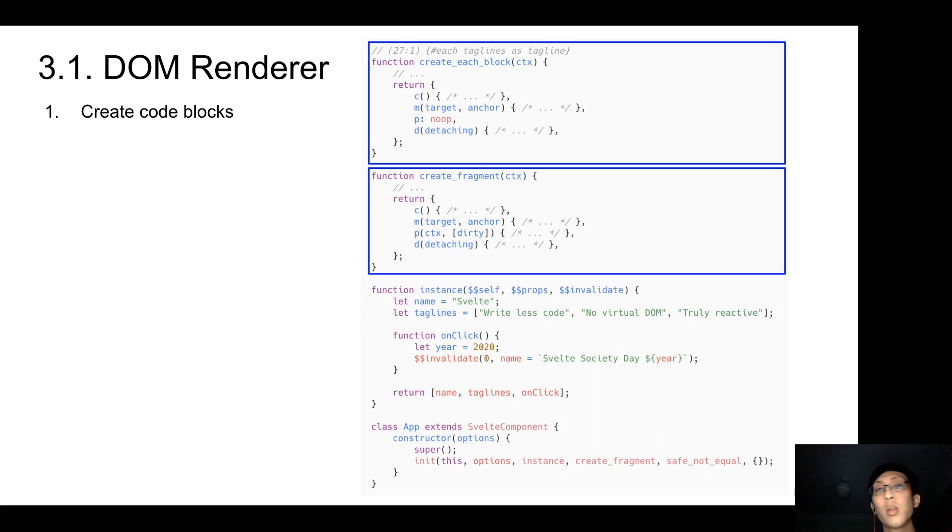For example, each block will create one fragment, which represents the instructions on how to create the DOM for one item. Whenever it iterates through the expression, it will call this fragment to create the DOM for that item. So when the DOM renderer traverses through the template AST, each node will start to create these fragment code blocks.